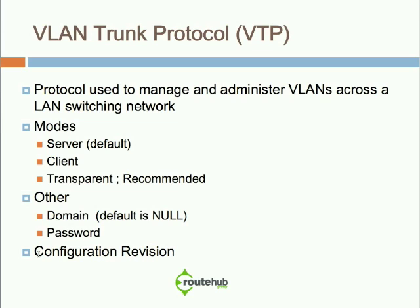The client sees the VTP packet with a new VLAN or a VLAN being deleted. It looks at the configuration revision number and compares it to its current number. If the incoming number is equal or lower, it will not accept those changes. If the number is higher — for example, a new VLAN was added, incrementing the server's number — it will accept the packet as new information about VLANs.